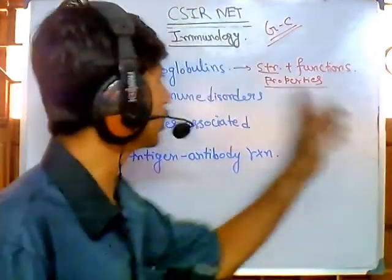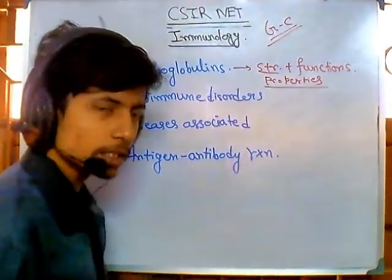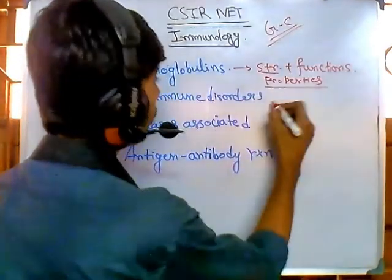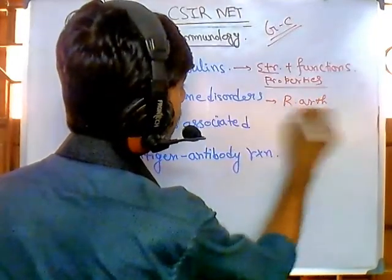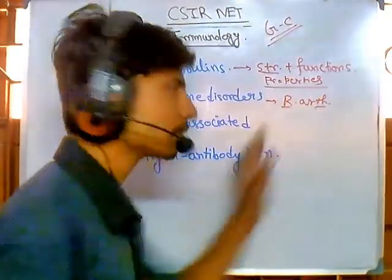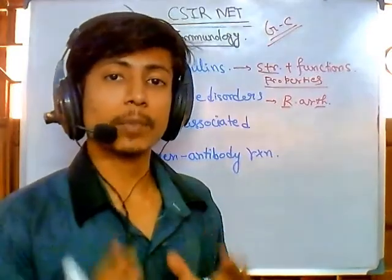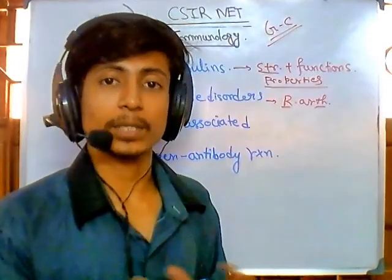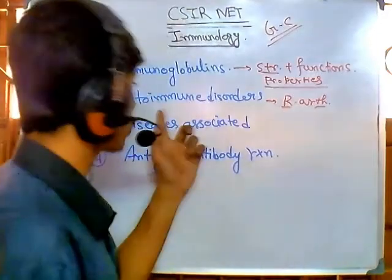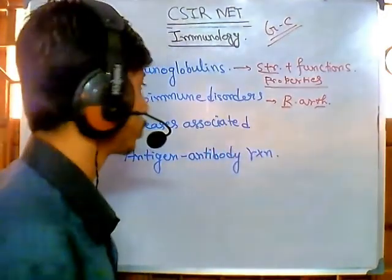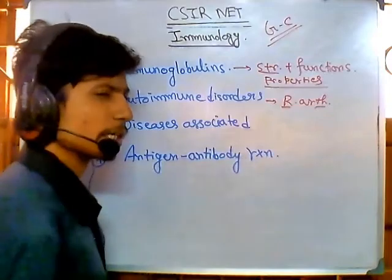Second is autoimmune disorders. For example, rheumatoid arthritis. You need to learn four or five very important diseases of major concern nowadays that are related to autoimmune systems or autoimmune disorders.